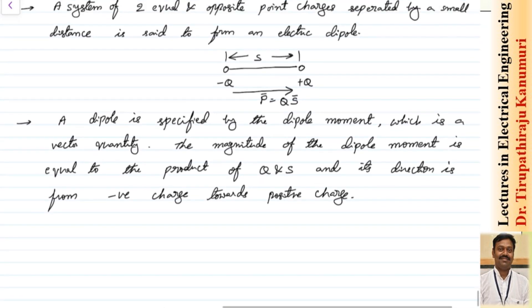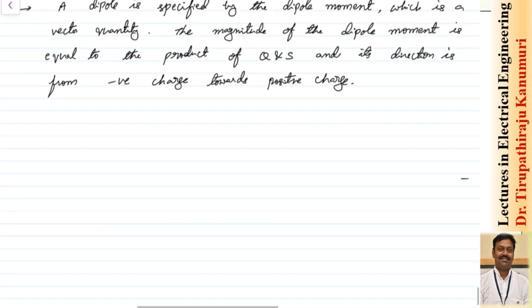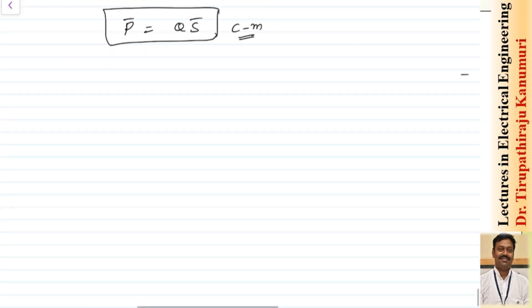So we can write the dipole moment as P is equal to Q multiplied by S. The units: Q is in Coulombs and S is the separation in meters, so this will be given in Coulomb-meter. Let us see what will be the effect of this dipole on the potential or electric field intensity at a particular point.